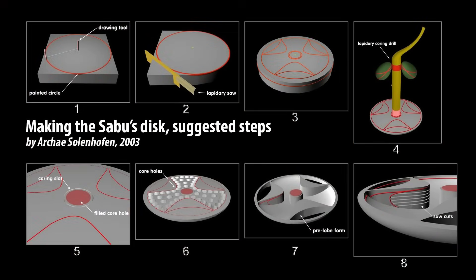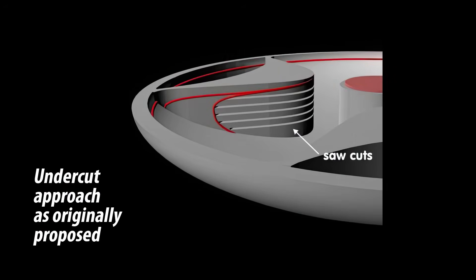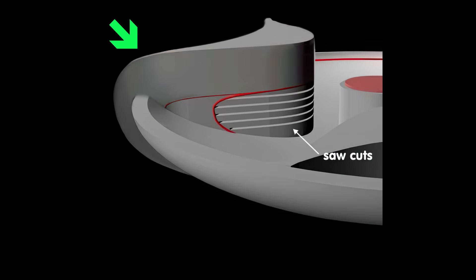Some time ago, a person named Solenhofen proposed how the disk of Sabu could have been made. We agree with most of this proposal, except the approach to the lobe undercuts. As proposed, the lobes would be created outside first, then hollowed out underneath. The problem here is that the thin lobe may break, as the undercut is being hollowed out in such a tight space. It would be more prudent to leave a thick protective shell on the outside during hollowing.